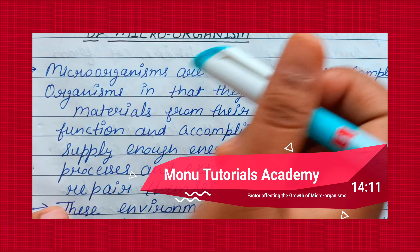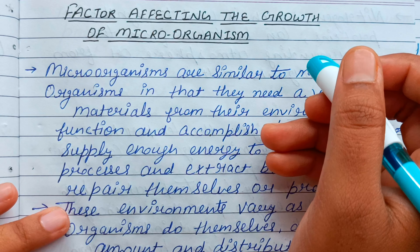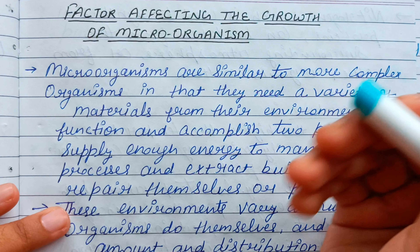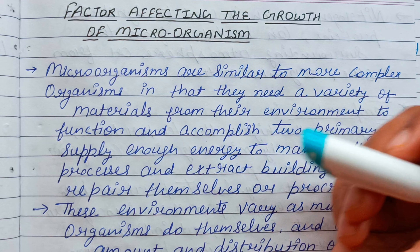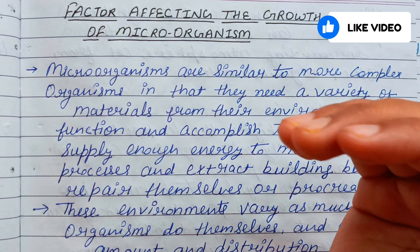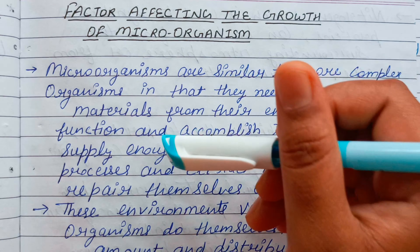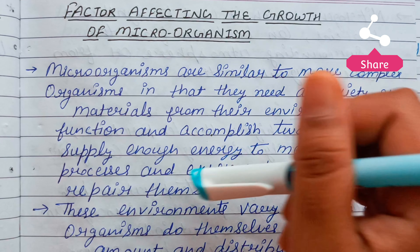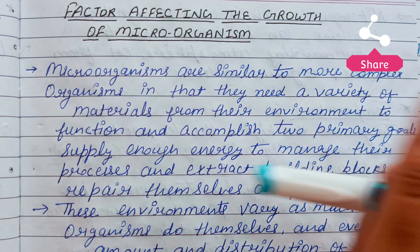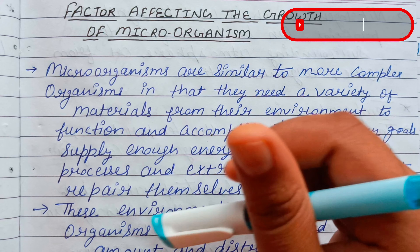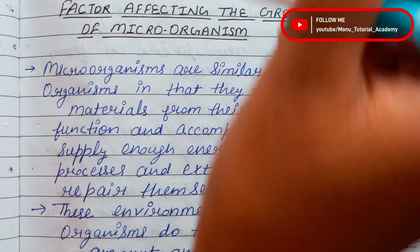Hello friends. In this video, I am going to study factors affecting the growth of microorganisms. Microorganisms are similar to more complex organisms in that they need a variety of materials from their environment to function and accomplish two primary goals: supply enough energy to manage their processes, and extract building blocks to repair themselves and procreate.